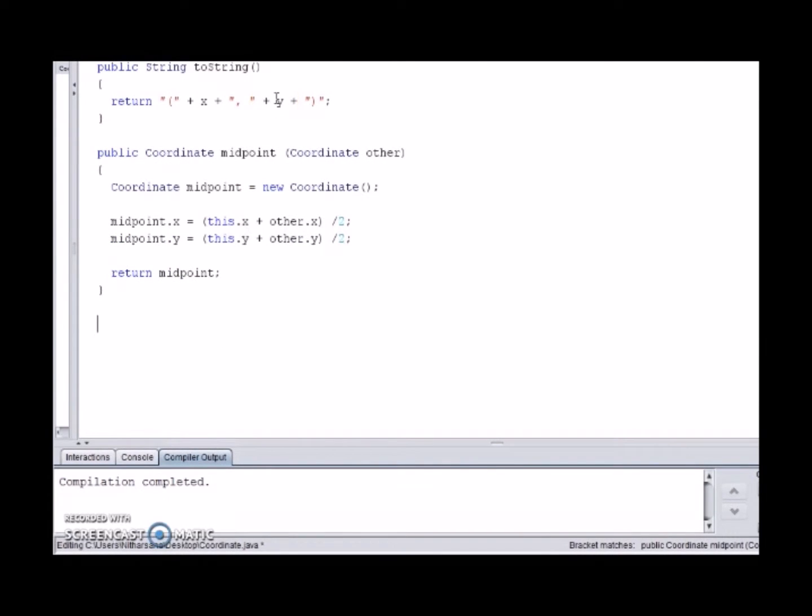Here we will create an example of a class method that will add two numbers. To create this, you will need to write public static. Notice how the static modifier is used. And then we put the return type and then the name with the parameters.